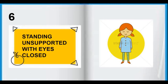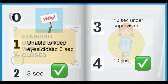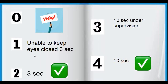The sixth task is standing unsupported with eyes closed. If the patient cannot stand without support with eyes closed and requires complete help, we give a score of 0. If they can stand without support with eyes closed safely for 10 seconds, we give them the maximum score of 4.